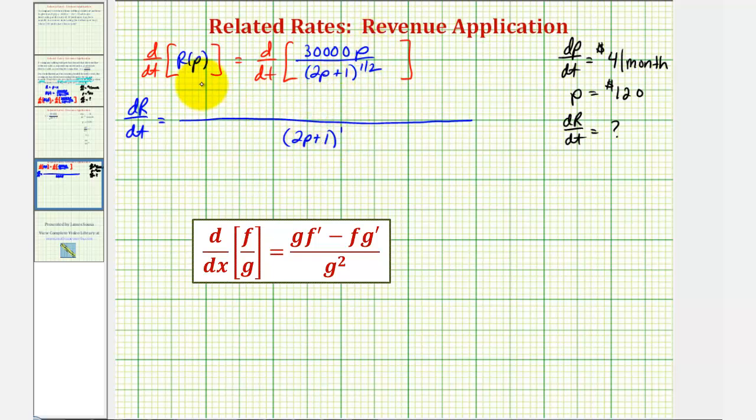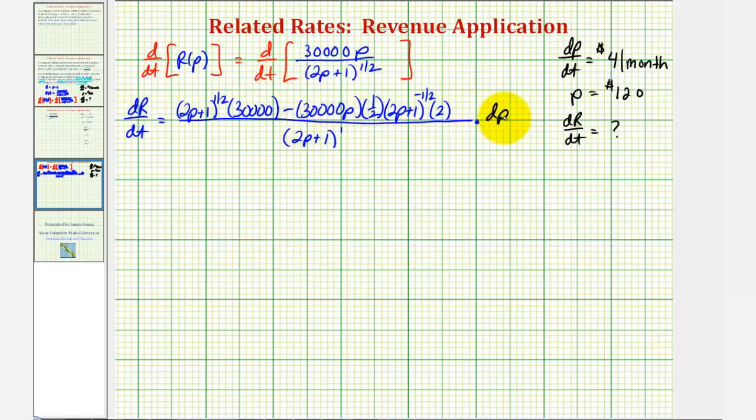the numerator of 30,000p times the derivative of the denominator. That would be one-half times the quantity 2p plus 1 to the negative one-half times 2. This requires a chain rule. And because we're differentiating with respect to t, we have a factor of dp dt.